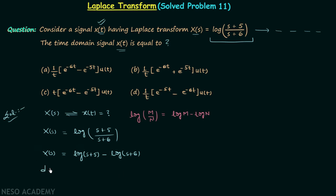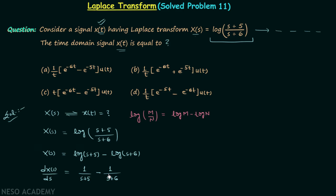So we will have dX/ds on the left-hand side, and on the right-hand side we will have 1/(s+5), because differentiation of log(s+5) with respect to s is 1/(s+5). Similarly, we will have 1/(s+6) as the derivative of log(s+6). So dX/ds = 1/(s+5) - 1/(s+6).